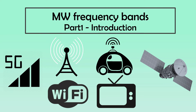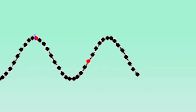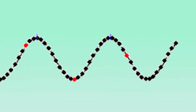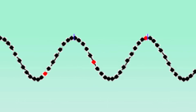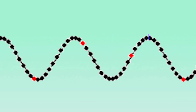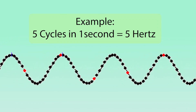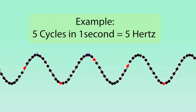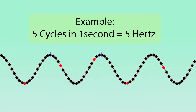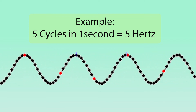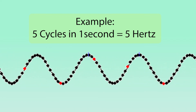Some basics: light and sound travel as a wave, and waves have frequency. To measure frequency, we see how often a wave repeats itself in a given time. For example, if the wave repeats 5 times in 1 second, its frequency is said to be 5 Hz — Hertz being the unit of frequency.